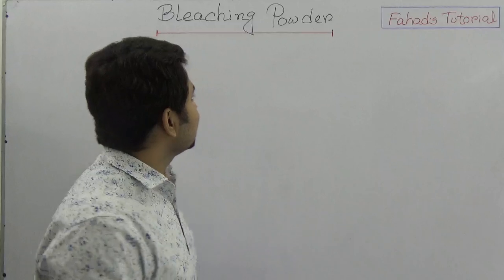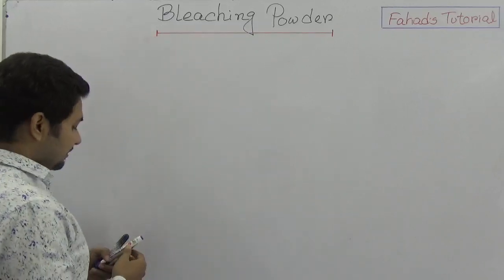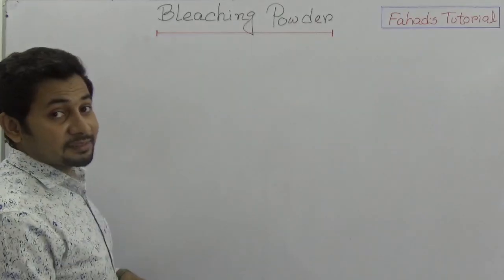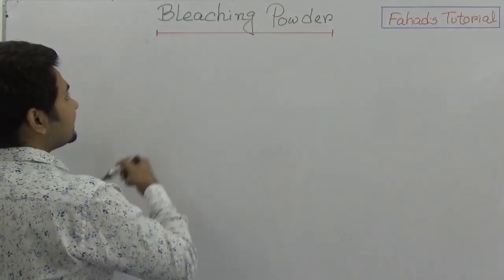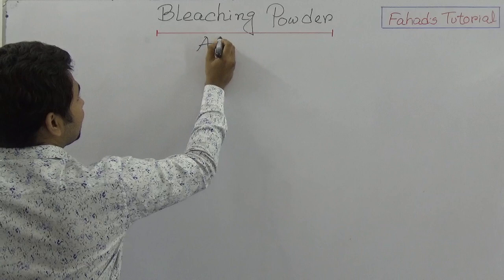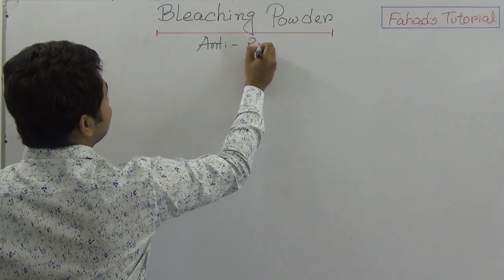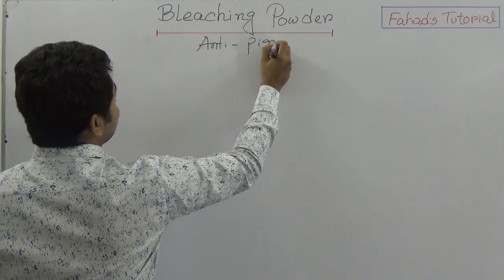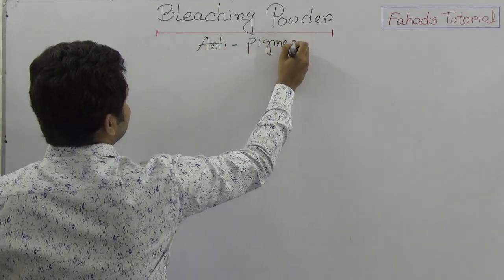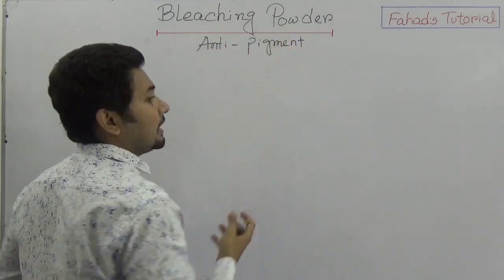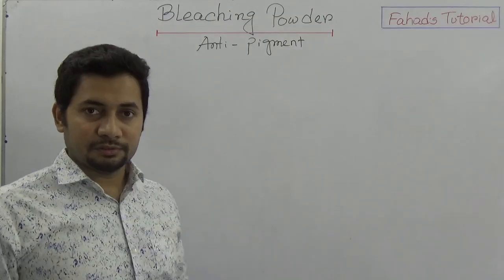We know that bleaching powder is sometimes called an anti-pigment. So the question is: how is it produced?